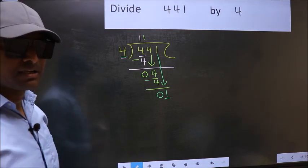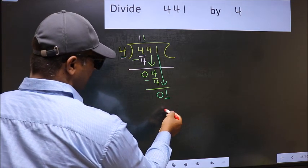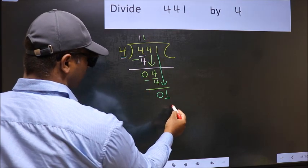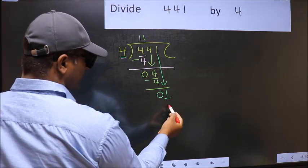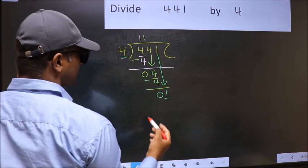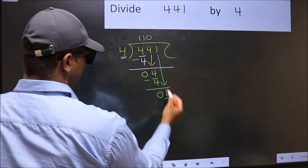Instead, what you should think of doing is, what number should we write here. If I take 1 here, I will get 4 here. But 4 is larger than 1. So, what we should do is, we should take 0. So, 4 into 0, 0.